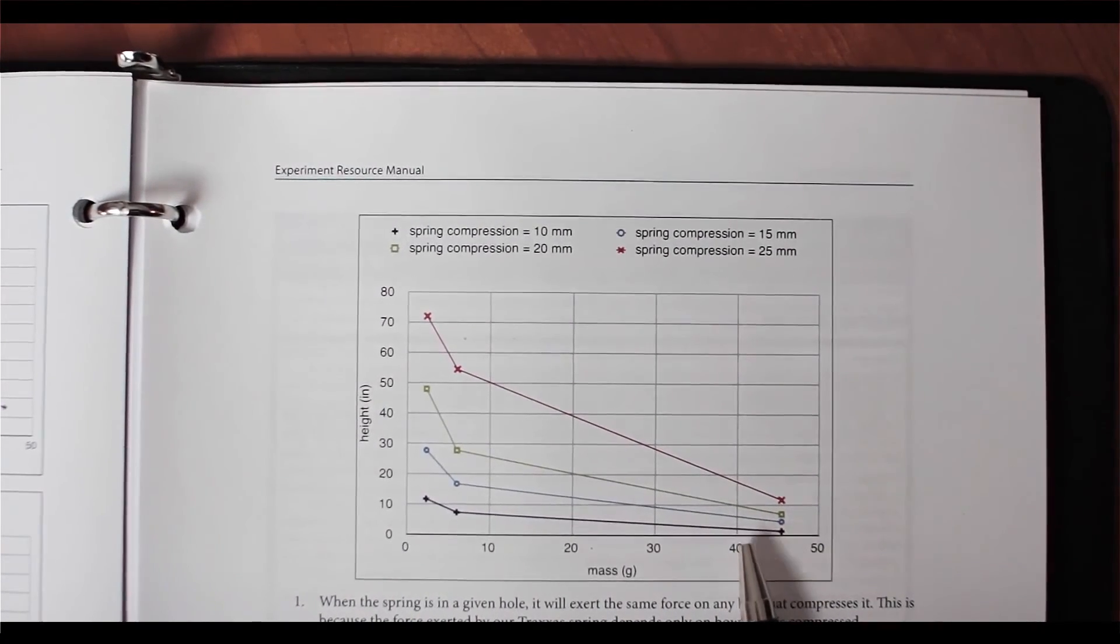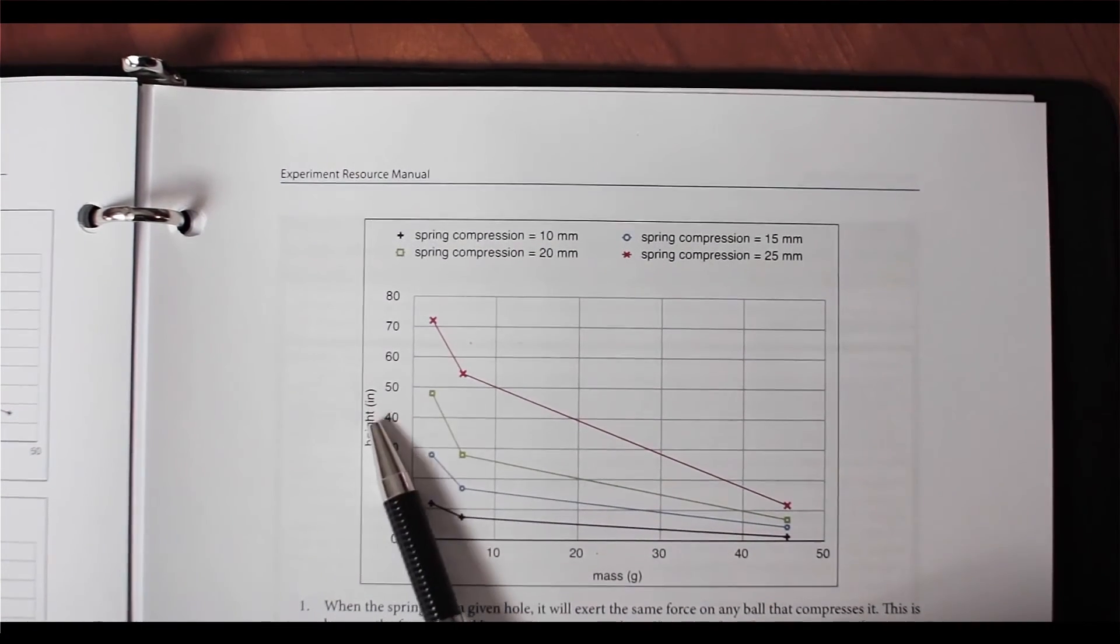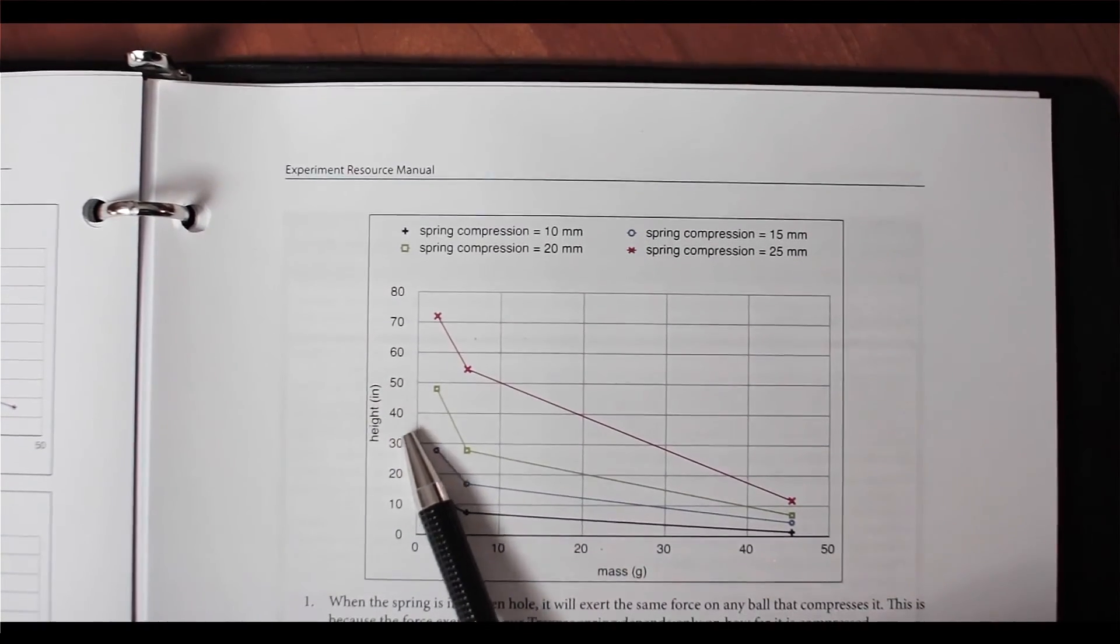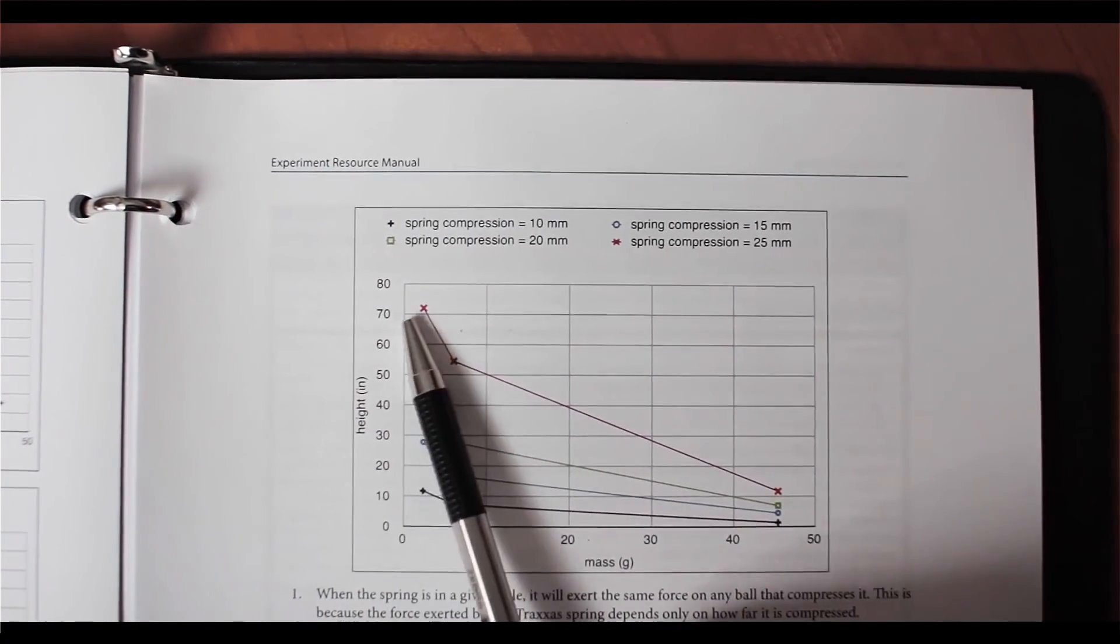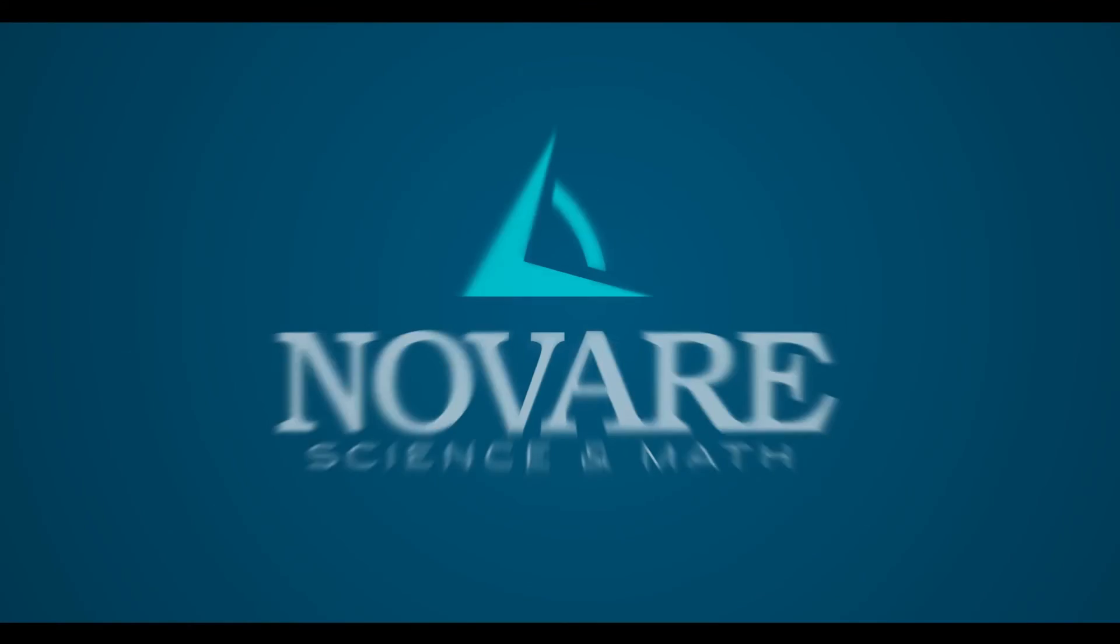The inertia of the ball is what the height is measuring. The height is our way of measuring the acceleration, and the acceleration is higher for lower masses and lower for higher masses. That's the end of this experiment.